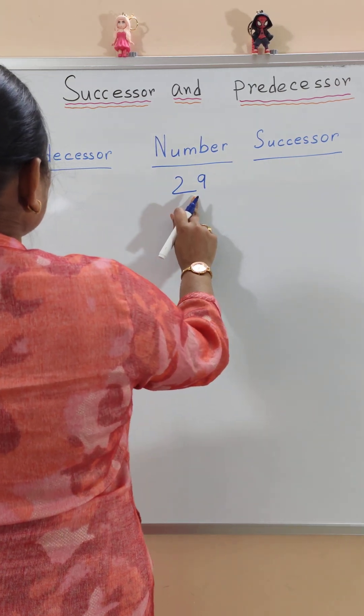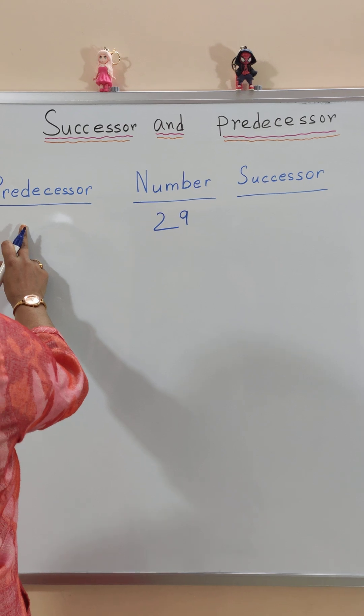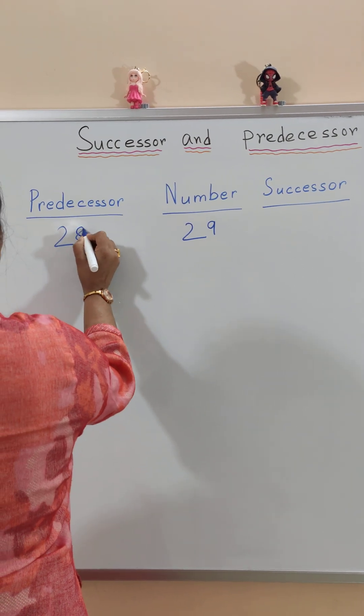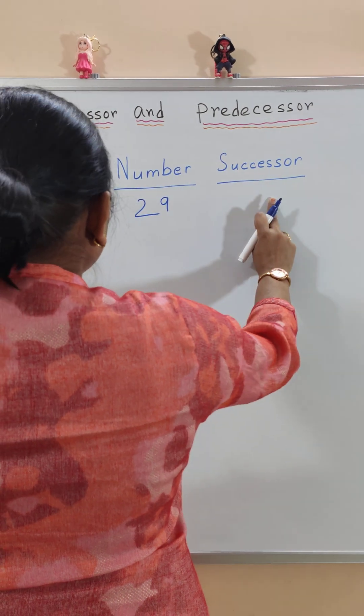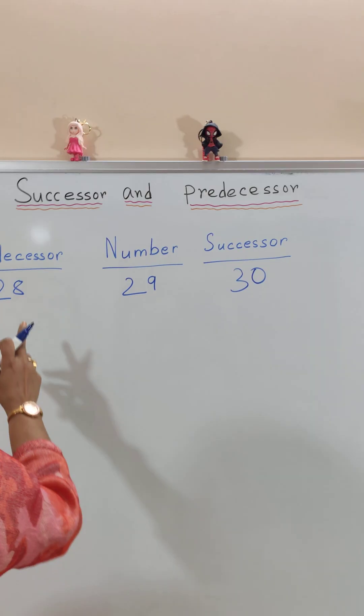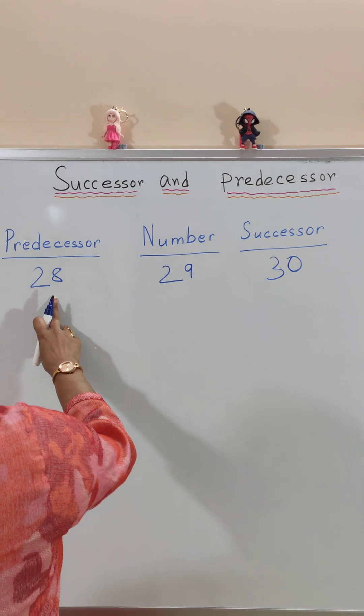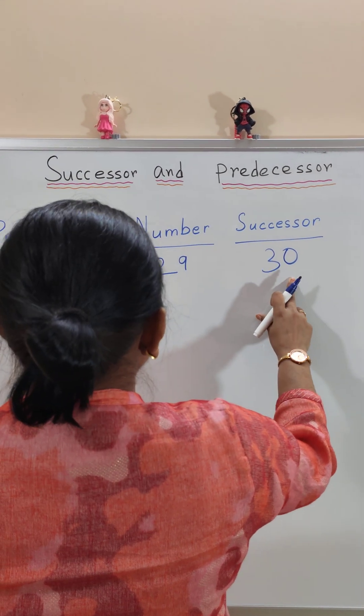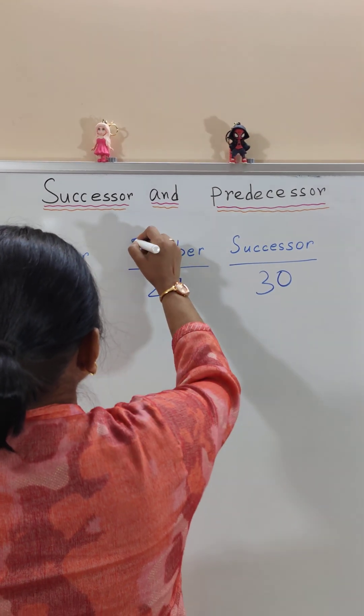Suppose the number is 29. The predecessor will be the number that comes before, that is 28. And the successor is the number that comes after the given number, that is 30. So the before number 28 is the predecessor and the after number 30 is the successor of the given number 29.